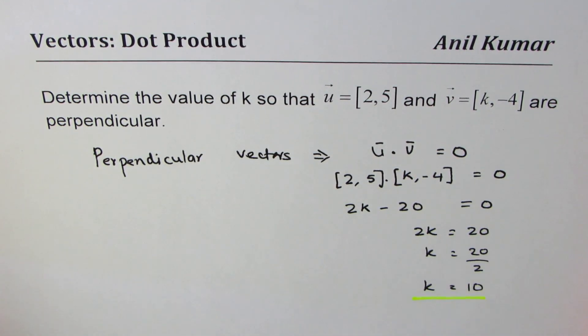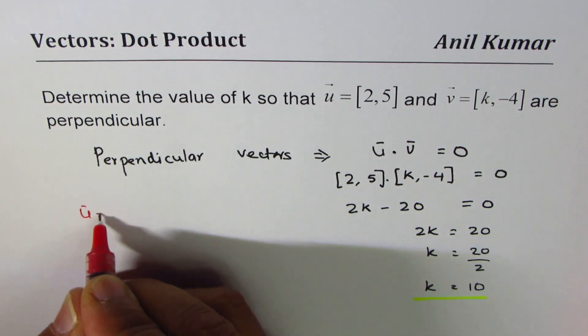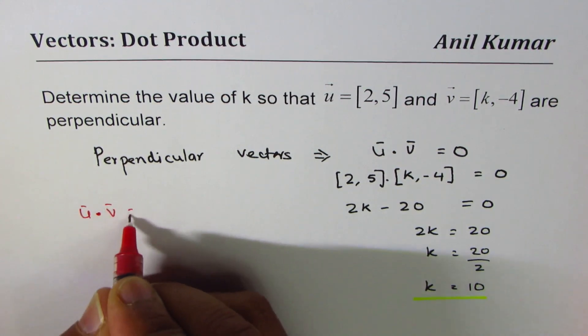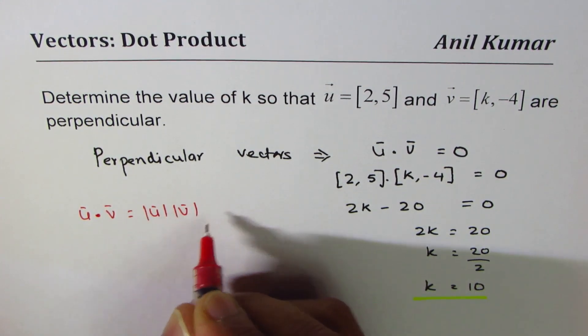So what we get here is that the value of k is 10. That's how we'll find solution of such questions. So the idea is that dot product should be 0 for perpendicular vectors.